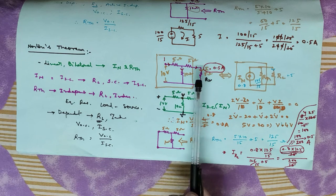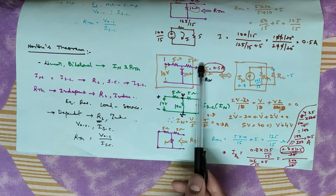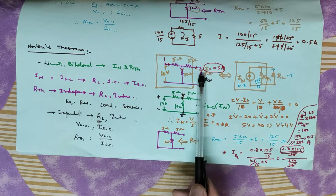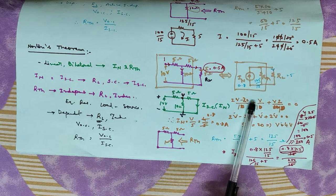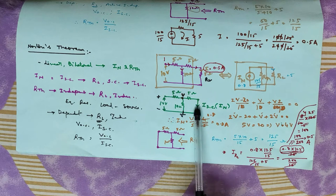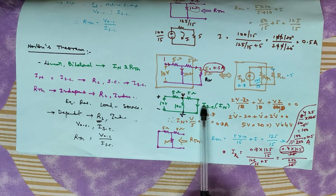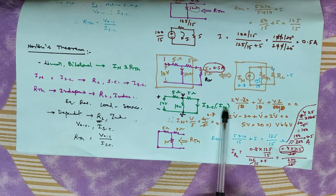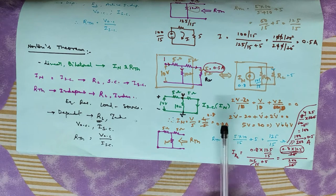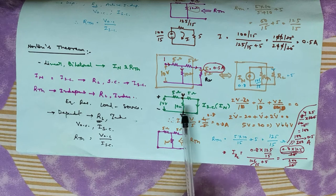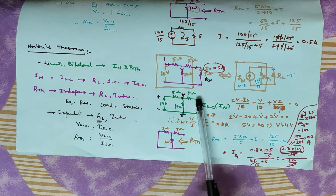The current ISC is the short-circuit current. Where there is a load resistor, when we calculate the Norton current, we remove the load resistor from the two terminals and short-circuit those terminals.